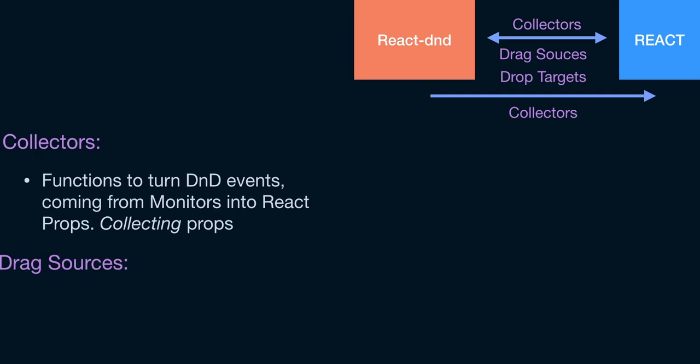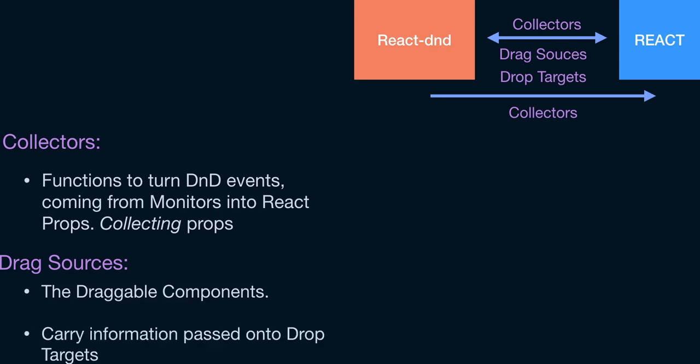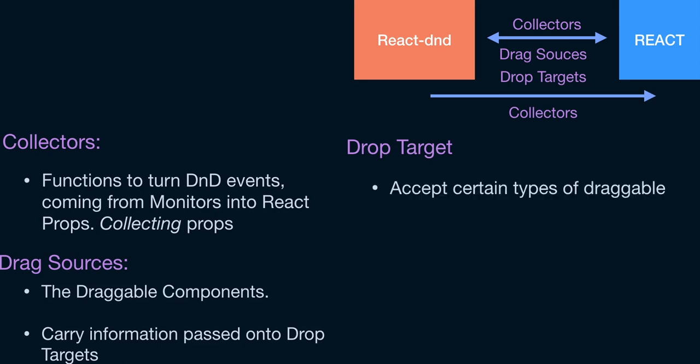Next up is drag sources. Drag sources are simply the draggable components. If you want to make any component draggable, you make it a drag source using the useDrag hook, which we'll get into shortly. Drag sources also carry information that gets passed to your drop targets — they carry the item type and can carry any additional data: a prop from that component, information from a database, anything.